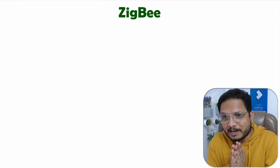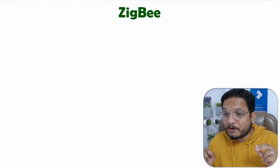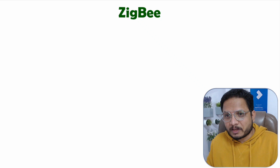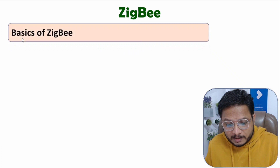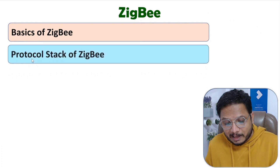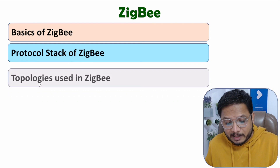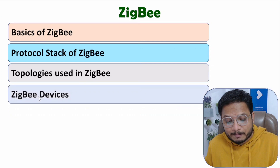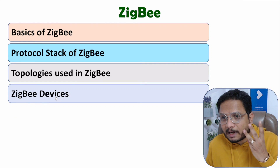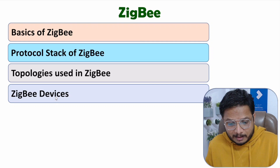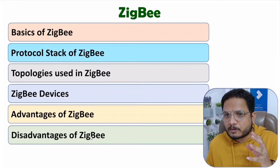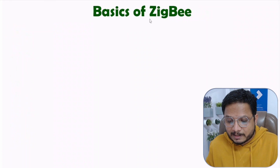Hello friends, welcome to Engineering Panda family. In this video, I will explain ZigBee protocol with complete details. Let me show you the outlines first. I will explain the basics of ZigBee, then cover the protocol stack, then three different topologies used in ZigBee, then ZigBee devices — there are three categories — and finally the advantages and disadvantages of ZigBee.